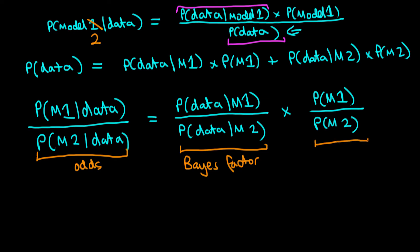This final term on the right — as far as I'm aware — doesn't really have a particular name, but it's just the ratio of the prior probabilities that we ascribe to each of the models. Now that we've defined what each of these elements are in our formula, I want to talk about some issues with using this odds framework to compare between models.